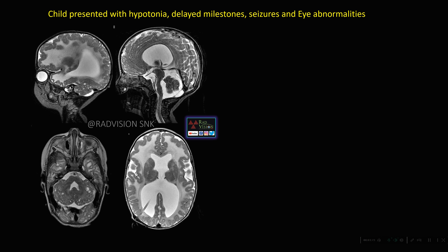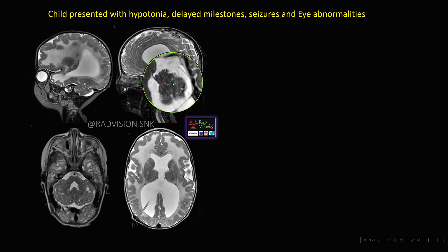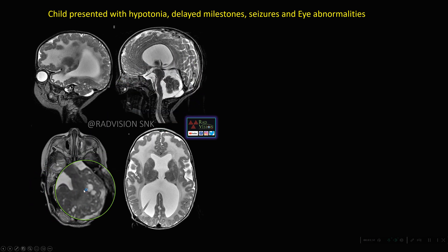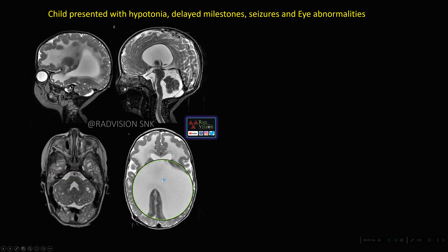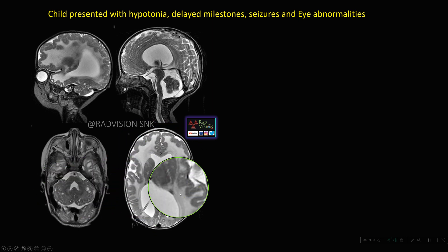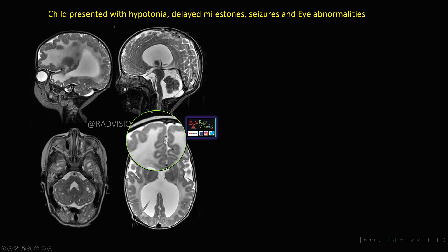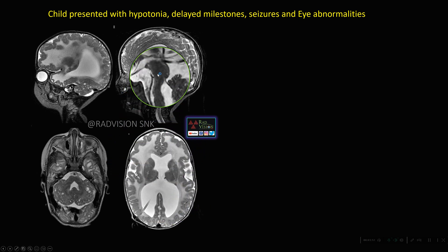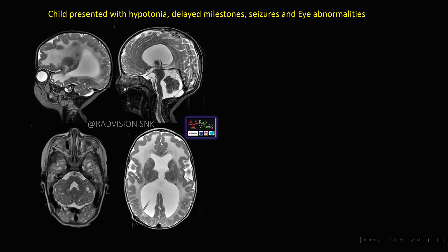Next case: a child presented with hypotonia, delayed milestones, seizures, and eye abnormalities. You can see there is a dysmorphic cerebellum — small cerebellum with multiple cysts and an abnormal folial pattern. There is also hydrocephalus and diffuse periventricular white matter hyperintensities with abnormal polymicrogyria. The brainstem is also abnormal with fused superior and inferior colliculi. So the baby has muscle symptoms (hypotonia), eye symptoms, and motor delay.